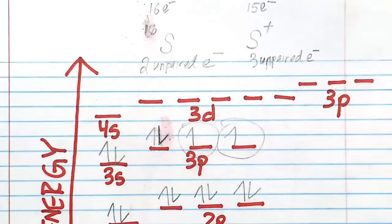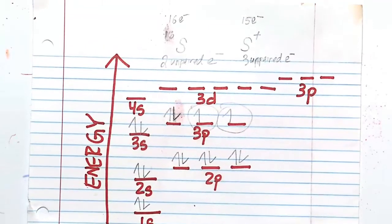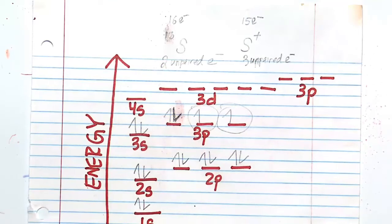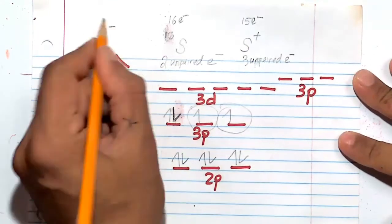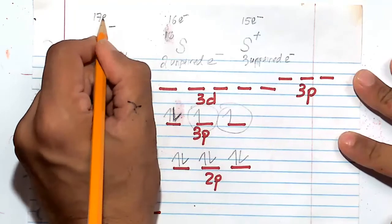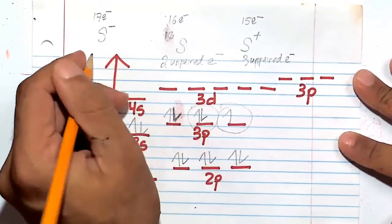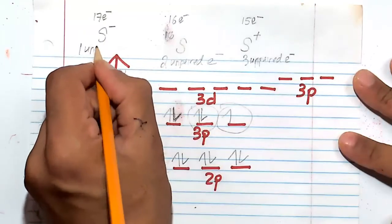So let's go back to the original electron configuration of sulfur. S had 16 electrons. S minus, we gain an electron. So here we have 17 electrons. We gain one more electron, and this would be one unpaired E minus.